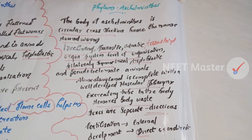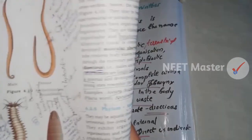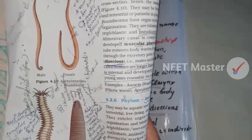Examples: Ascaris (roundworm), Wuchereria (filarial worm), Ancylostoma (hookworm). In the textbook, figure 4.10 shows two diagrams of female and male Aschelminthes.